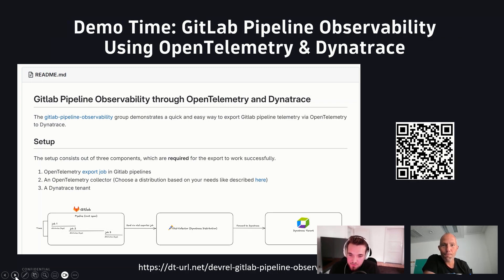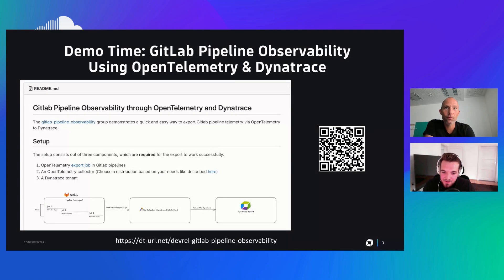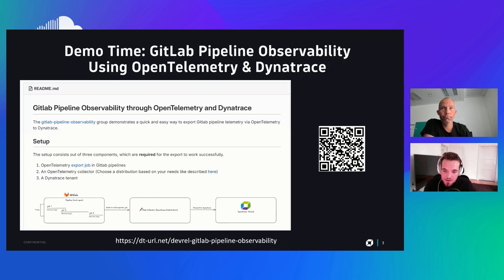Before jumping into the demo, let me give a few insights into what we're going to do. We can see here in the readme that we will basically set up the whole process of gaining insights and observing the pipelines in just a few minutes - it's quite easy and quick to get up and running. We'll start with setting up the telemetry collector and then go to our GitLab pipelines. As Andy mentioned, we've put this in a public GitLab repository so everybody can have a look.